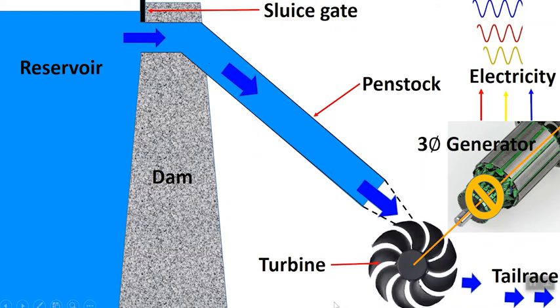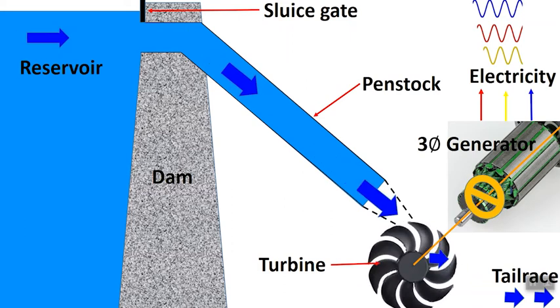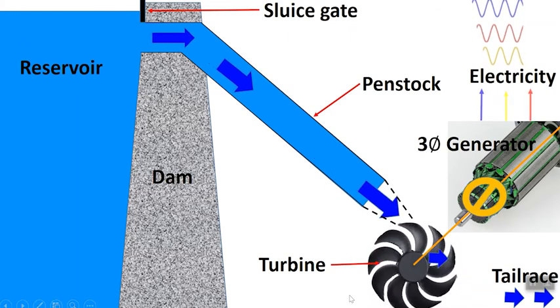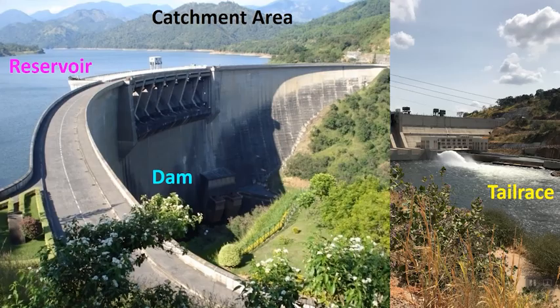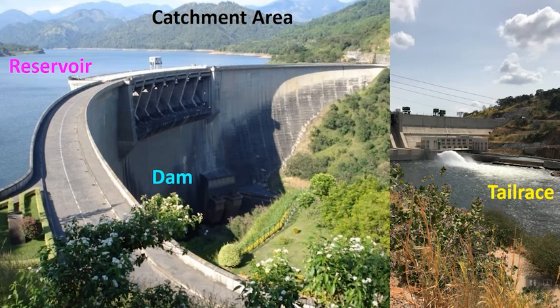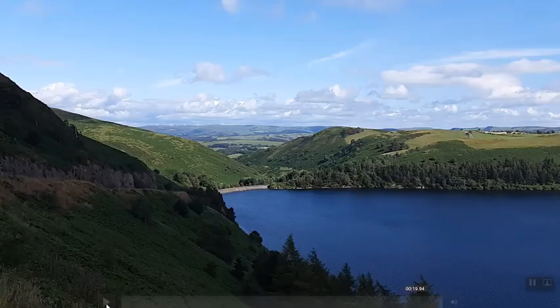The turbine shaft is coupled to a synchronous generator and it will produce three-phase electricity. These actual hydropower plants will give you a nice picture and a good idea. If you need to store a large amount of energy — a huge amount of water — your large reservoir plus the large catchment area will do the job. Once water goes through the turbine, it comes to the tailrace. Here you can see a dam and a large reservoir with a huge catchment area.